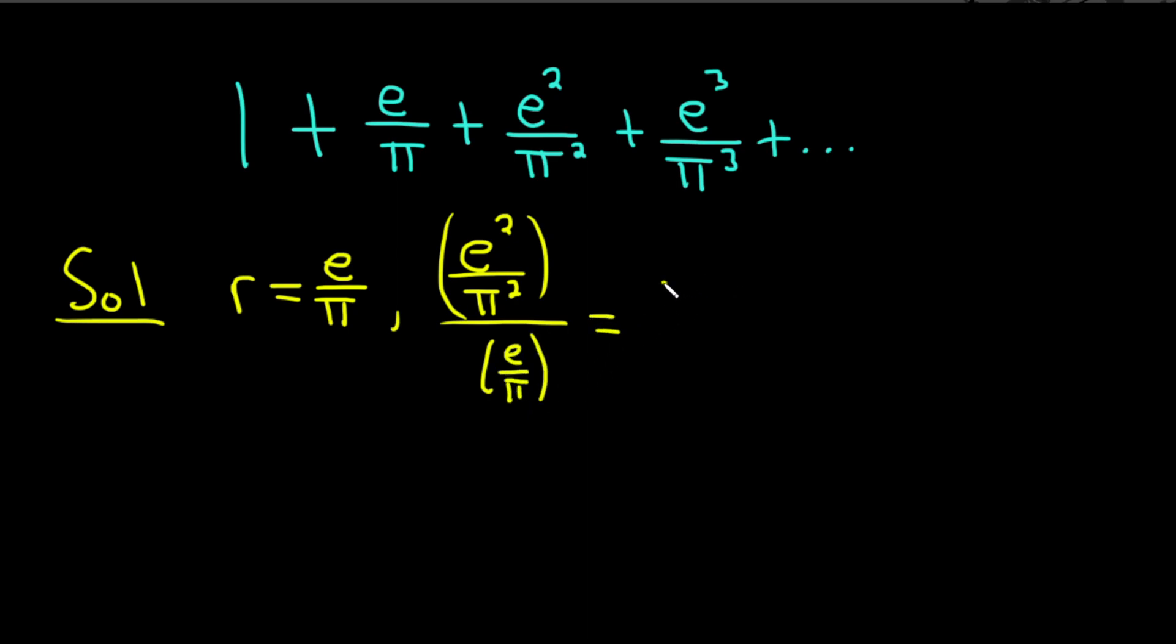Well, that's equal to e squared over pi squared. And when you divide by e over pi, you really multiply by the reciprocal, so pi over e. And you see we lose a copy of the e and a copy of the pi, and so we're left with e over pi, which is r. So that always works. You can just take any of these and divide by the previous.